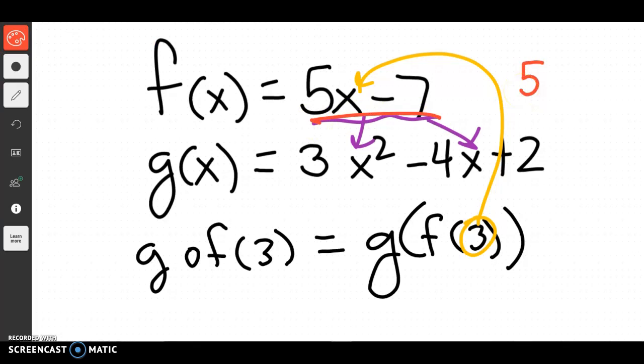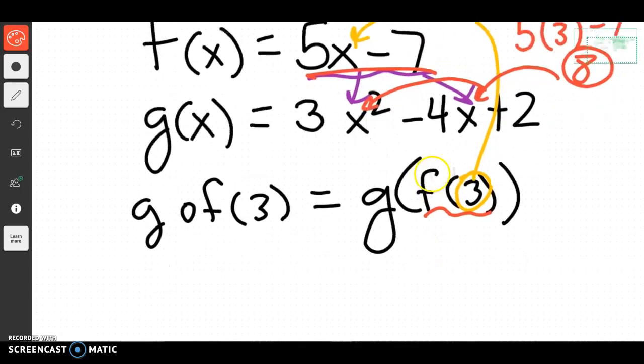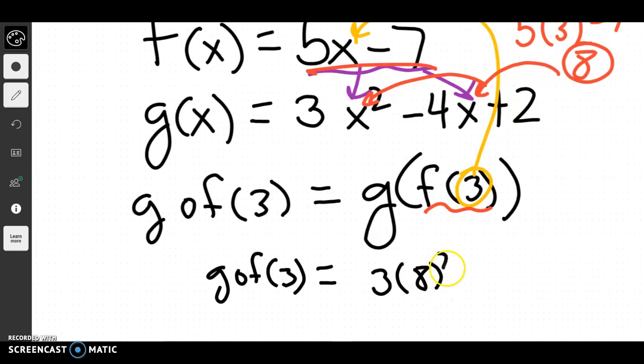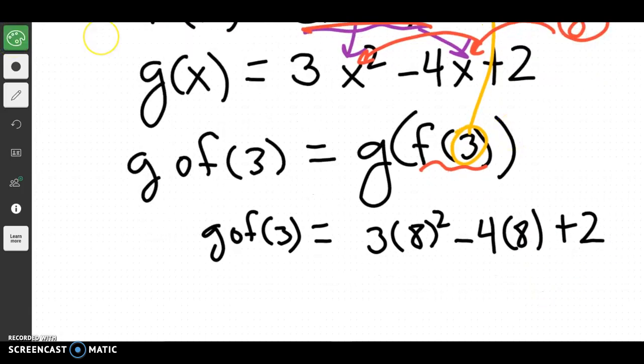If you have 5 times 3 minus 7, that would be 15 minus 7 or 8. So that's what f of 3 is. And now we're going to take that, plug it into both x's. So when I do this, g of f of 3 would be 3 times 8 squared minus 4 times 8 plus 2. Well, because of order of operations, we'd have to do the square first. So that would be 64 times 3 minus 32 plus 2.